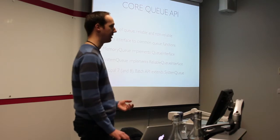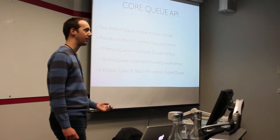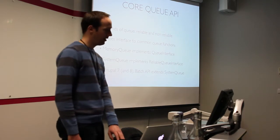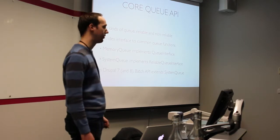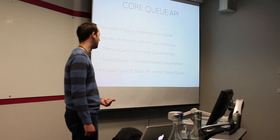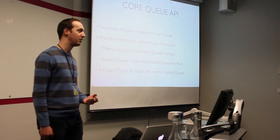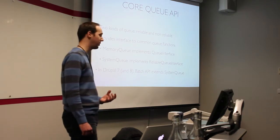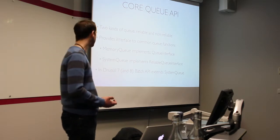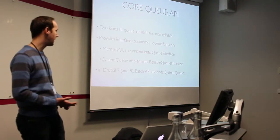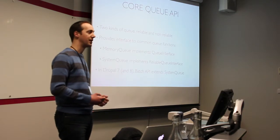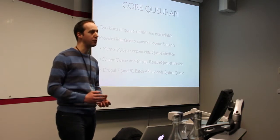A non-reliable queue is generally used for things where you're not too worried about success or failure, and the advantage is much faster writing times when you're not worried about order. An email queue might be a good example. In Drupal, the memory queue implements the non-reliable interface, while System Queue — renamed Database Queue in Drupal 8 — implements the reliable interface, storing items in a database table. It's worth pointing out that the Batch API uses queuing internally to manage its items via System Queue.